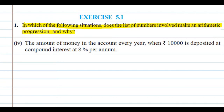Just like I have explained in the previous part, we have this situation and we will determine whether the list of numbers will be an AP or not, and explain it with a reason. In the fourth part, the situation is: the amount of money in the account every year when 10,000 is deposited at compound interest at 8% per annum.